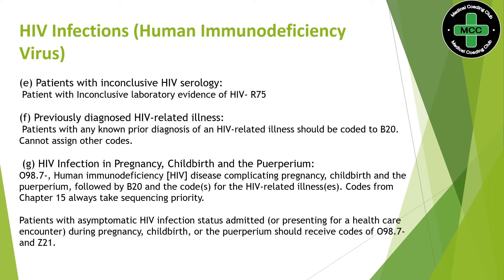For previously diagnosed HIV-related illness: if a patient has a known prior diagnosis for an HIV-related illness, it should also be coded to B20. We cannot assign any other codes.